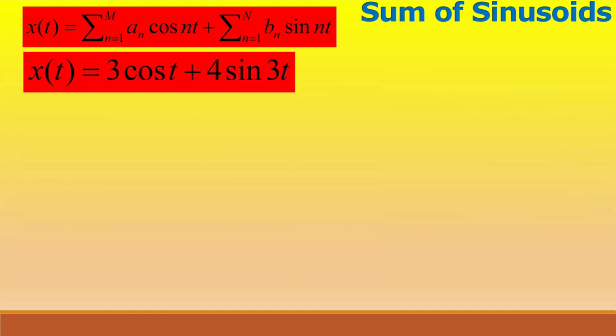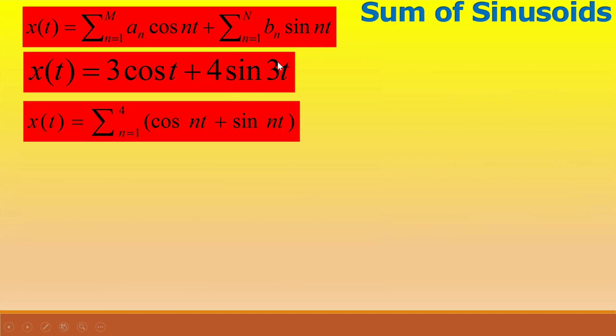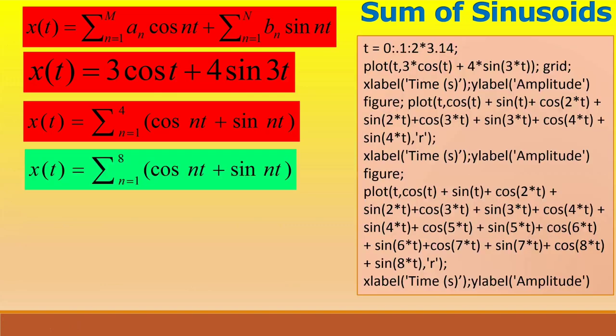We can generalize the summation through a relation as shown. An elementary case could be to have simply the sum of 2 sinusoids as shown previously. In the last 2 cases, aₙ = bₙ = unity. Next we show a plot for the case of x(t) = 3cos(t) + 4sin(3t). The other 2 plots are the same except the first one sums 4 sinusoids consisting of 3 harmonics and the second has 7 harmonics.